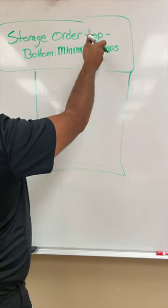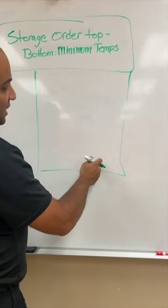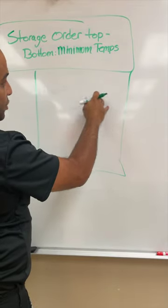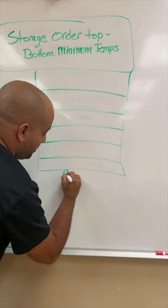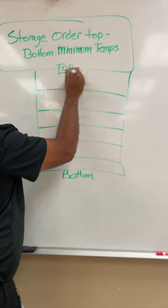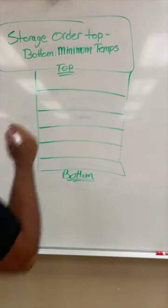We're going to go from lowest temperature to highest temperature when putting away our food on shelves. This is the bottom of the fridge, the top of the fridge. Ready-to-eat food always goes on the top shelf. It doesn't need any further cooking.